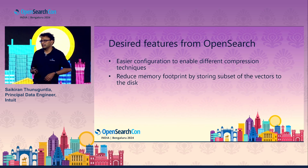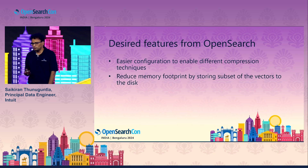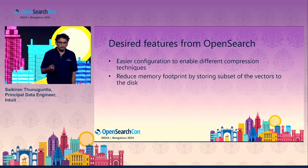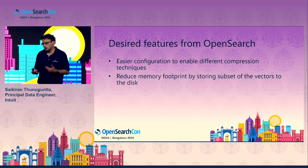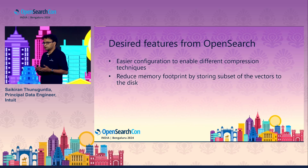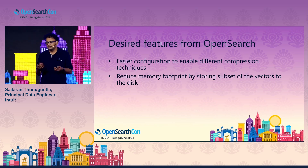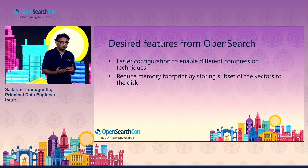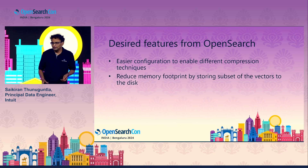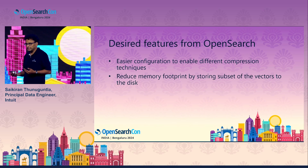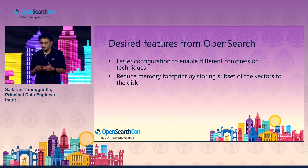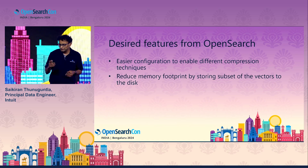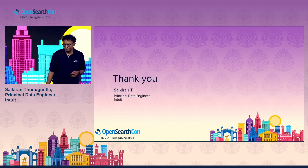A couple of things we are looking forward to in our close partnership with OpenSearch: better compression techniques on product quantization, and reducing the memory footprint. Today the memory footprint is predominantly powered by RAM, and we are partnering with OpenSearch to use a combination of SSDs and hard drives along with RAM. As one of the earlier speakers mentioned, in big companies cost is a very important factor alongside accuracy and speed, so we always try to reduce costs. Thank you.